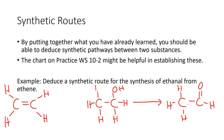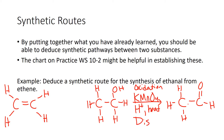Anytime you're doing a reaction like this, you should always state the conditions. This is an oxidation reaction. You would need either potassium permanganate or potassium dichromate — you could say either one — under acid conditions with a little bit of heat. And because we're trying to make the aldehyde and not continue to the carboxylic acid, we're going to distill it as it forms.